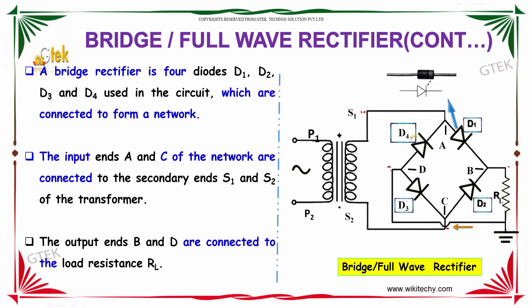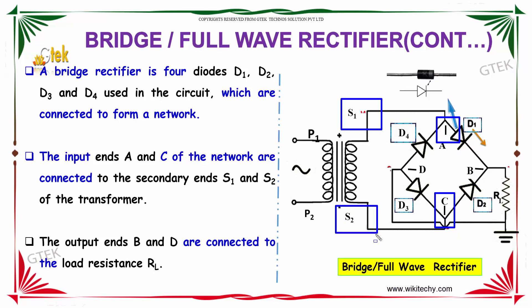A bridge rectifier has four diodes — D1, D2, D3, and D4 — connected to form a network. The input ends A and C of the network are connected to the secondary terminals S1 and S2 respectively. The output ends B and D are connected to the load resistance RL.